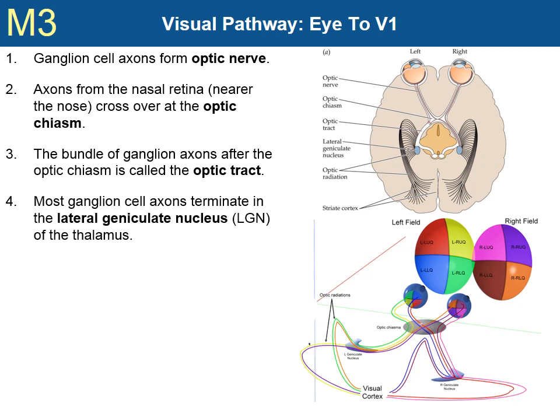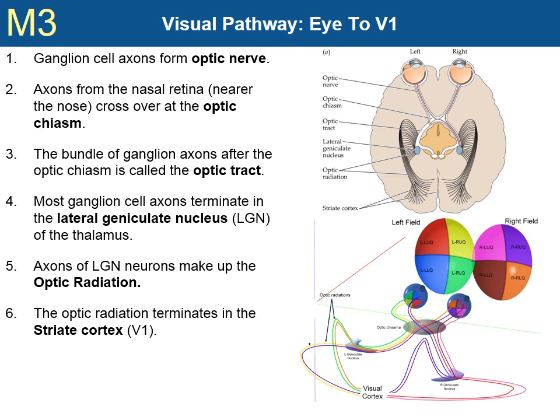Axons of the LGN neurons make up what is called the optic radiation. The fibers of the optic radiation are still organized as they were after the optic chiasm — that is, the fibers of the left optic radiation correspond to the right upper and lower quadrants of each eye. The optic radiation extends from the LGN to the striate cortex, also known as V1, or the primary visual cortex.